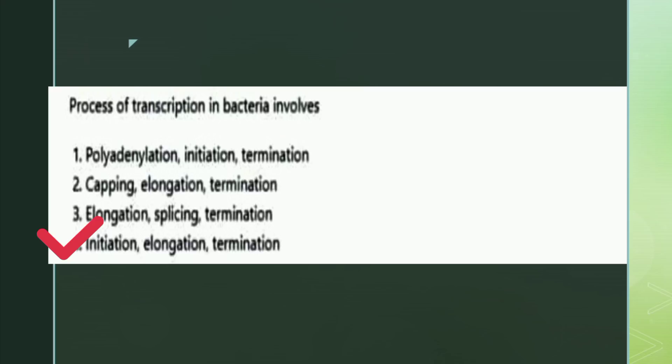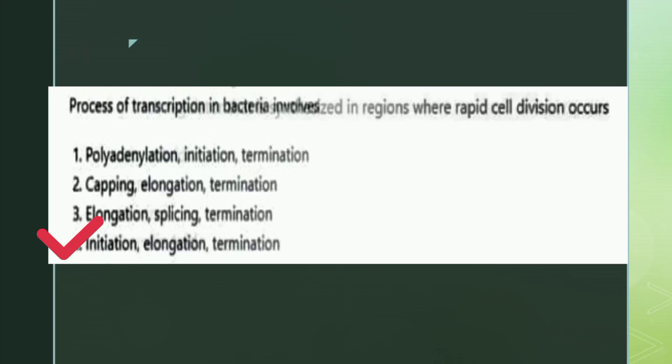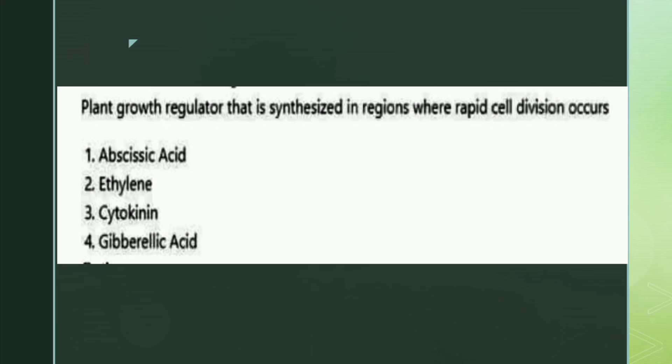The next question: which plant growth regulator is synthesized in regions where rapid cell division occurs? The options are abscisic acid, auxin, cytokinin, and gibberellic acid. The right answer is option three: cytokinin.